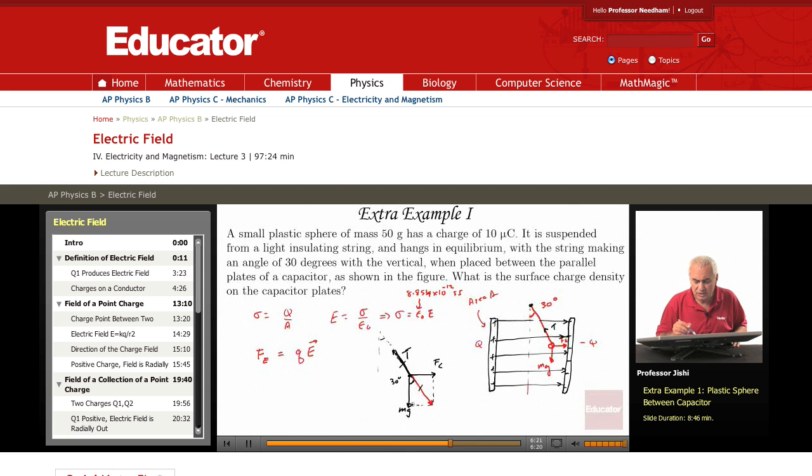So it must be that, I'm going F_E okay instead of F_C. So tangent 30 is opposite over adjacent. The opposite is F_E which is Q E divided by the adjacent which is M G.